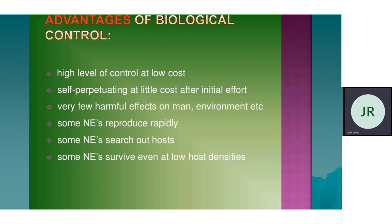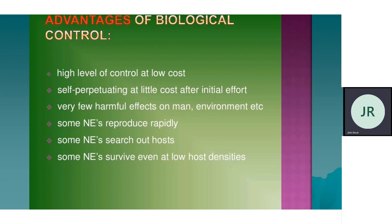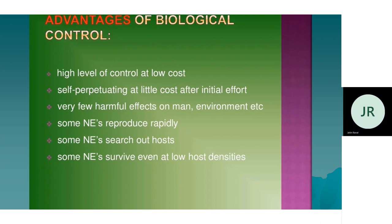Advantages of biological control: high level of control at low cost. Once we have the initial investment, we don't have to invest much. Natural enemies, if they reproduce rapidly, we don't need to reintroduce; if they reproduce at a low level, we need to introduce again. In other chemical methods, we have to find the pest and apply mechanical, cultural, or chemical pesticide — but here it is like a small robot working for us; it itself will find the pest.